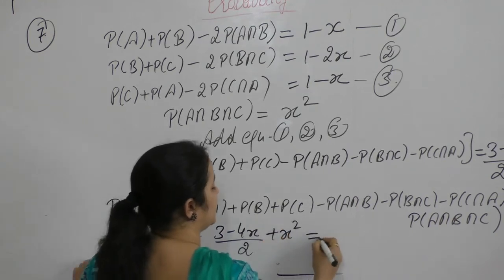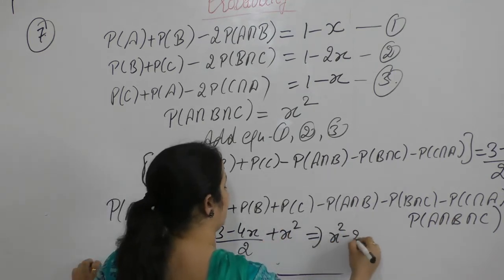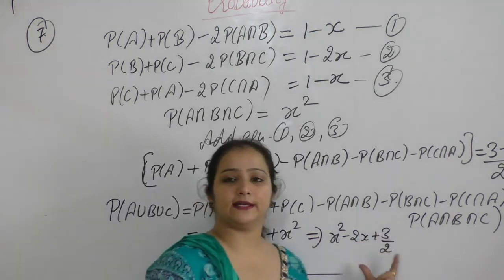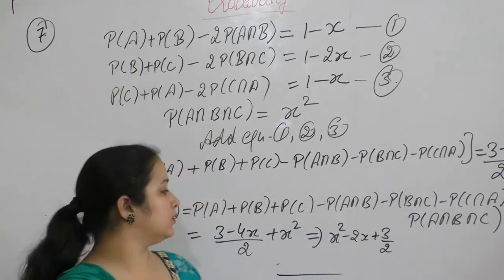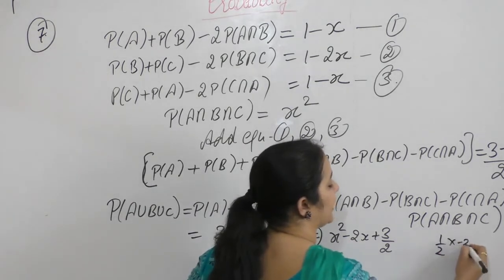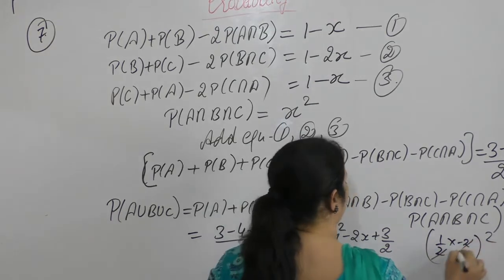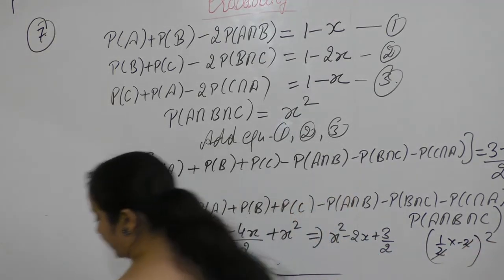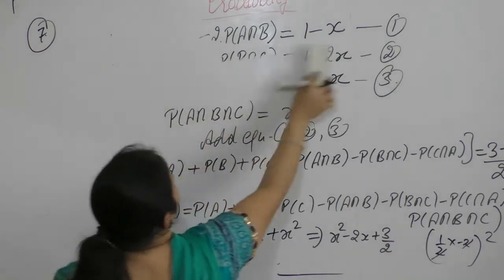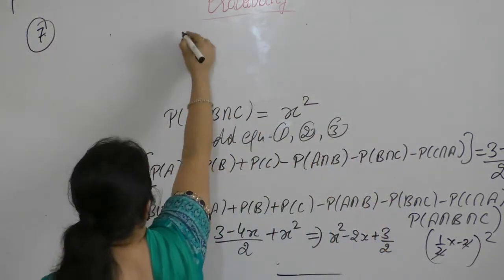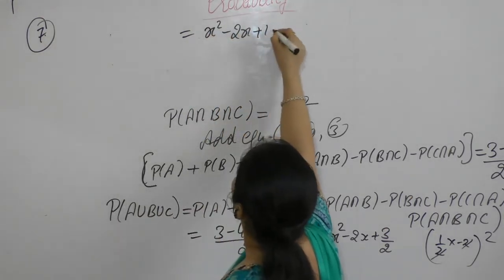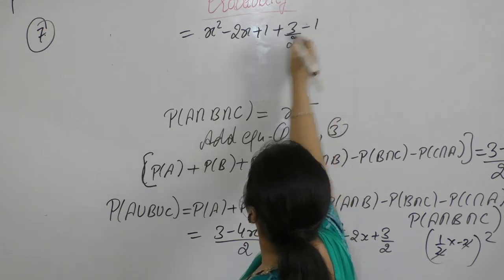Plus x square. So it becomes x squared minus 2x plus 3 by 2. Now completing the whole square — we will add and subtract half the coefficient of x, whole squared. Coefficient of x is 1, so we will add and subtract 1 here. So it becomes x squared minus 2x plus 1 plus 3 by 2 minus 1.